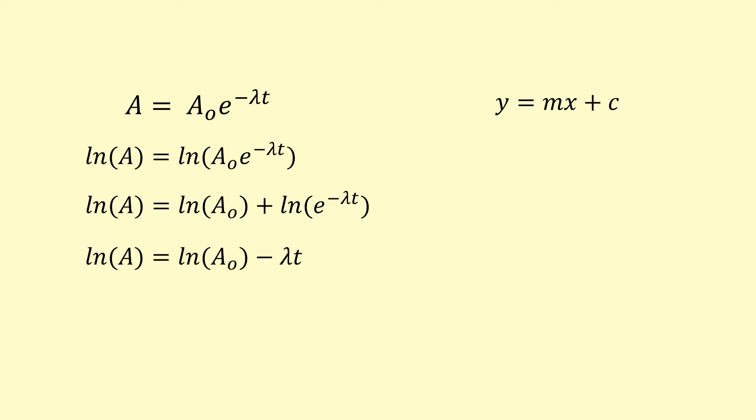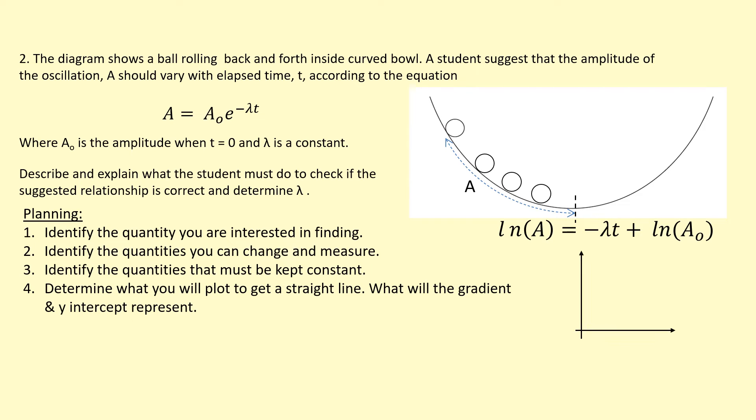I'm going to rearrange this in a way that's a bit easier to compare. If I plot on my y-axis ln A, on my x-axis if I plot t, then my gradient will be minus lambda, and my y-intercept will be ln A0. I'm going to put those on the axis there, ln A against t, and that should give me a negative gradient line.